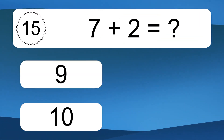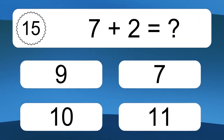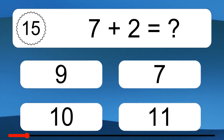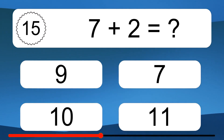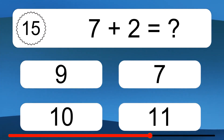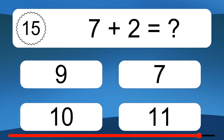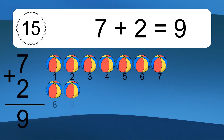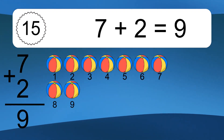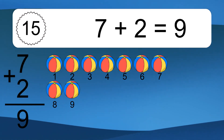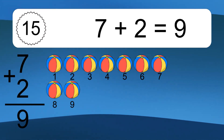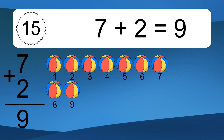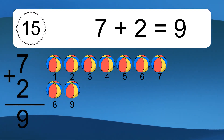7 plus 2 equals what? 7 plus 2 equals 9. Let's count it: 1, 2, 3, 4, 5, 6, 7, 8, 9.